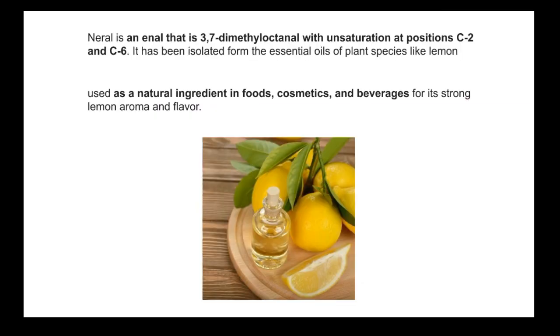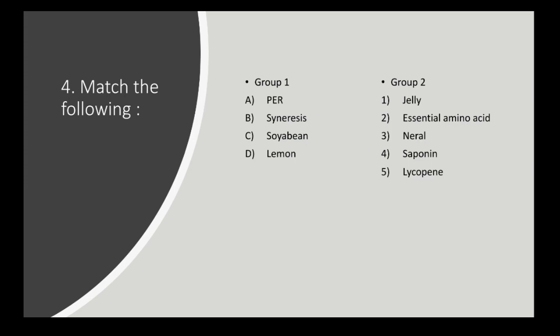Neral is a compound present in essential oils of certain plant species like lemon. It is a natural ingredient in the lemon family and is used in cosmetics, foods, and beverages because of its strong lemon aroma and flavor. So the correct matches are: PER → essential amino acids, syneresis → jelly, soybean → saponin (an anti-nutritional factor present in soybean), and lemon → neral.